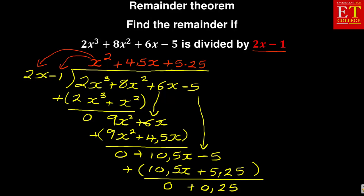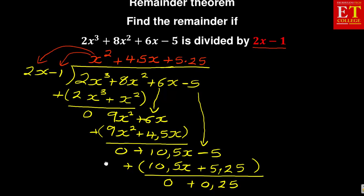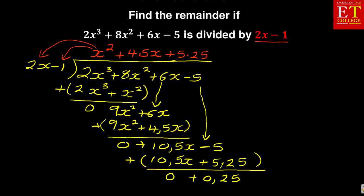So now this is the division that you get. This 0.25 is called the remainder. The question said find the remainder if this is divided by that. So the remainder in this case is 0.25. That's how you solve this problem.